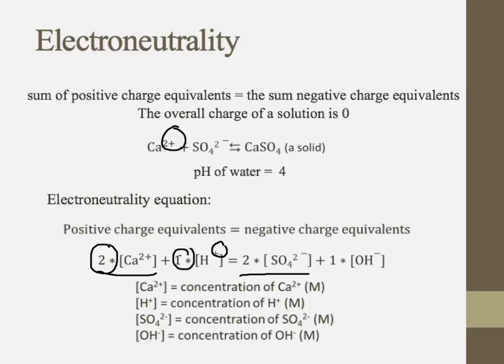So then the sulfate has two negative charges associated with it. That's why there's the two there. And then the hydroxyl just has the one negative charge, so we just multiply that by one.